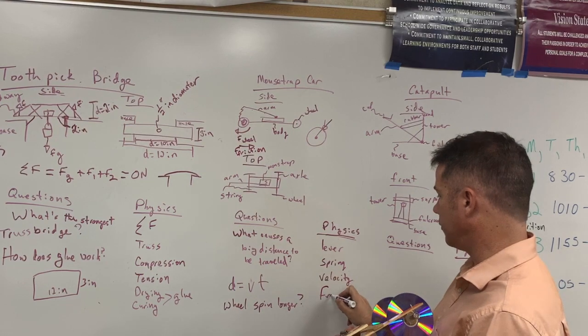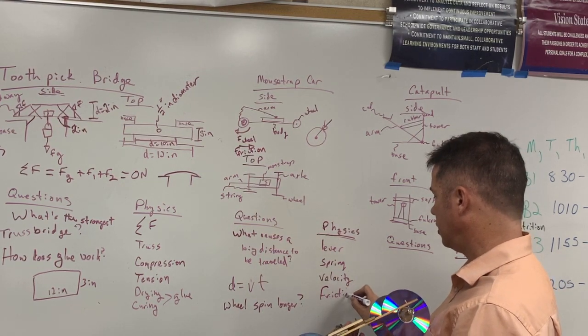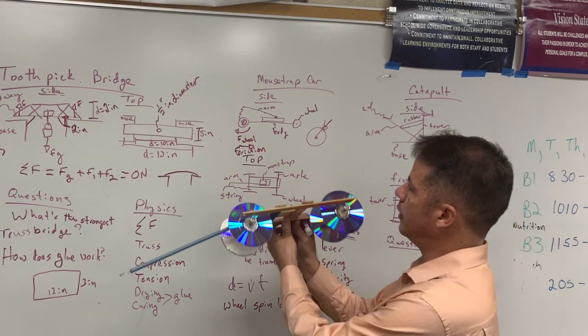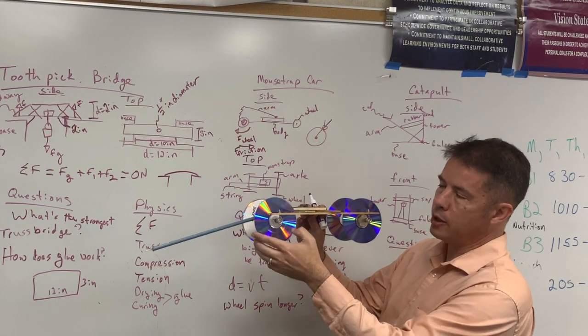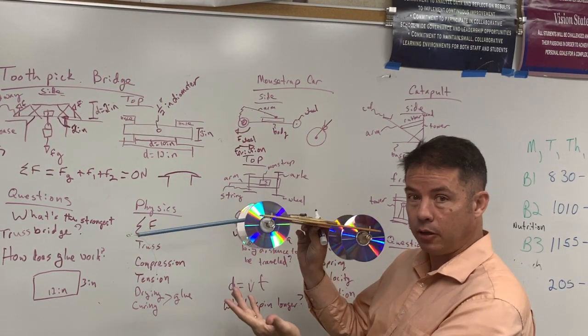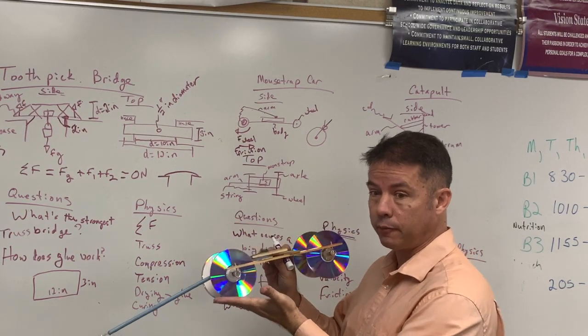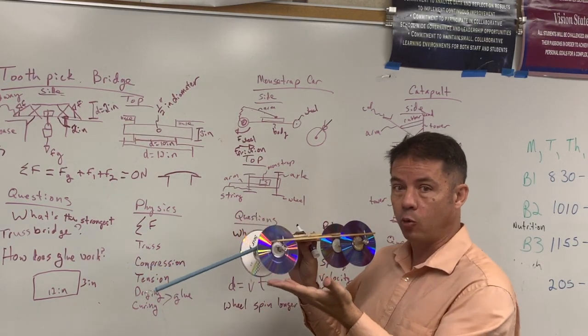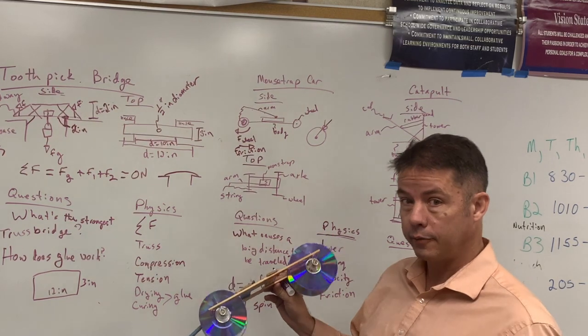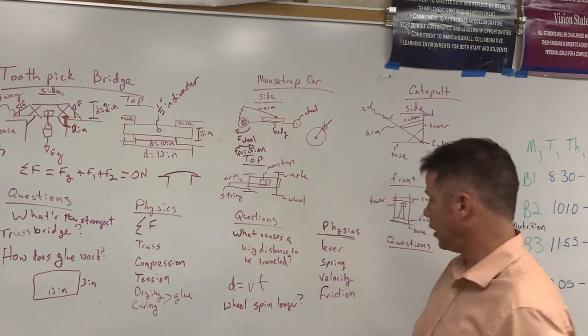So that might be another one you have to think about. So that's something else you will have to think about for your design. If your wheels spin out on the tile, then your car is not going to go anywhere. So do you need to increase the friction or is the friction of your wheel fine? You're probably going to have to test that out.